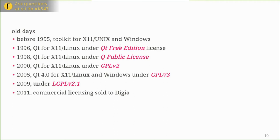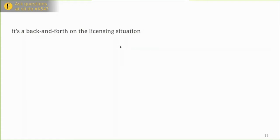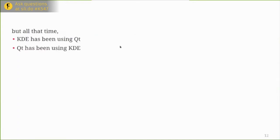In 2011, the commercial licensing arm — remember, Qt is being developed by a company all this time — was sold to Digia. So there's been a lot of back and forth on the licensing situation. It's been licensed under a number of different free software licenses and also commercial terms all this time. And the KDE community, building KDE software which has always been released under GPL v2, sometimes v3, has been around all that time and gone with the times.